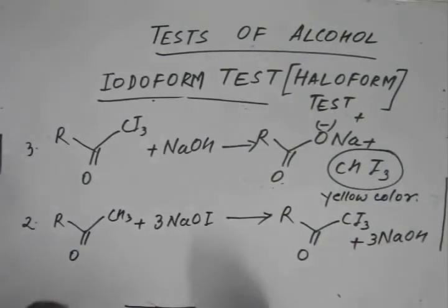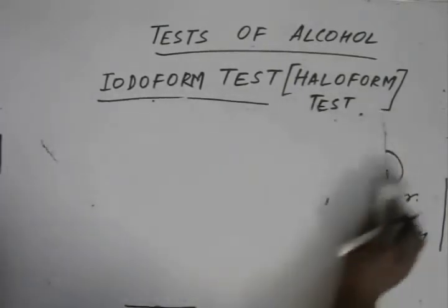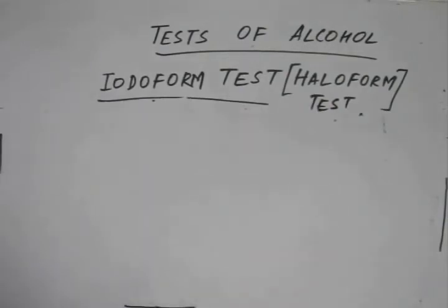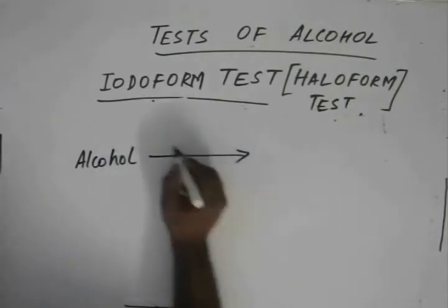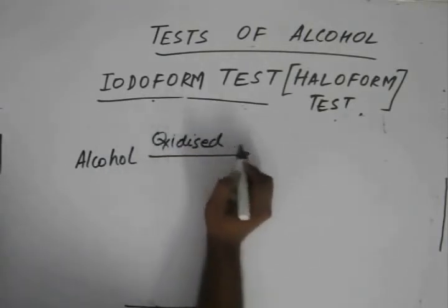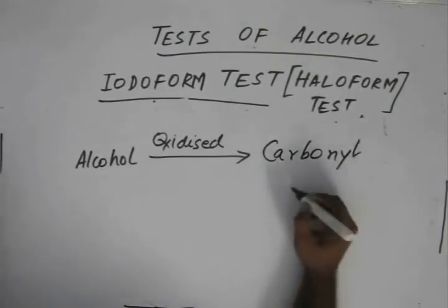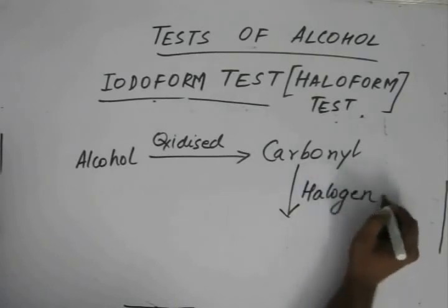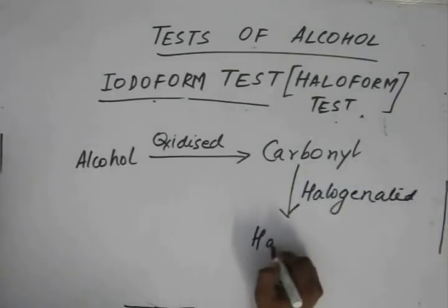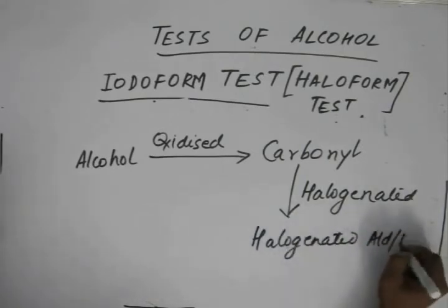So the first step of this reaction is the oxidation of the alcohol — the alcohol is first oxidized to the corresponding carbonyl compound. Now this carbonyl compound is halogenated, giving us a halogenated aldehyde or ketone.